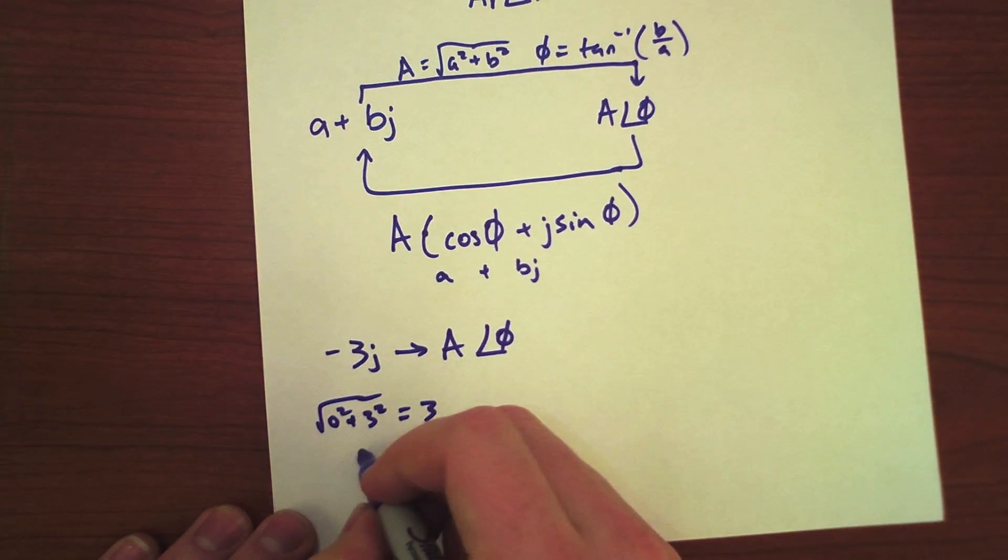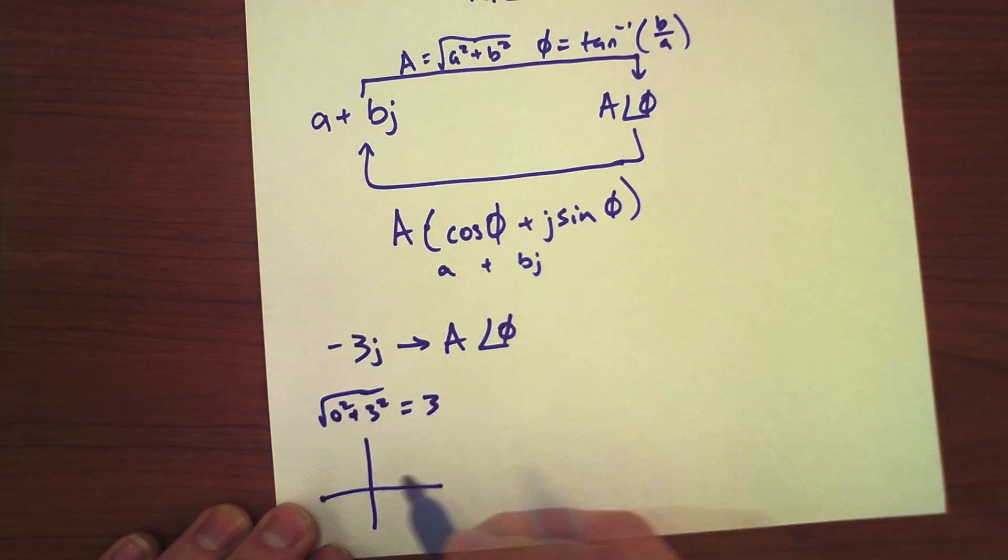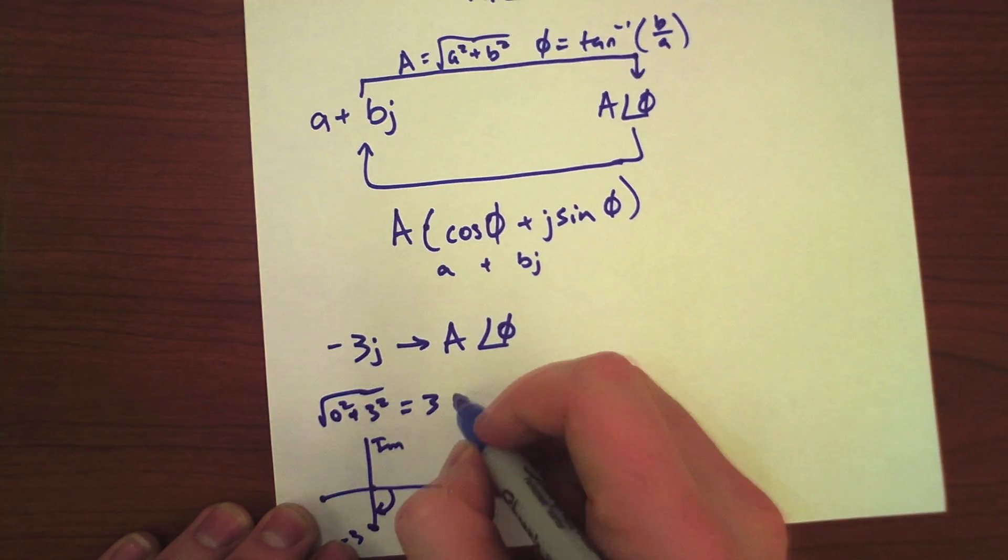That's pretty obvious. And then for our angle, we know that real part is 0. This is minus 3. So, this angle is just going to be minus 90 degrees.